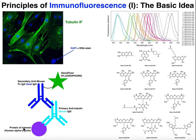In this example we're going to use human alpha tubulin as our protein of interest. We want to identify alpha tubulin, and alpha tubulin is what we're going to look at in this IF image — they're very pretty images. So we have a protein of interest: human alpha tubulin. This is a human protein.